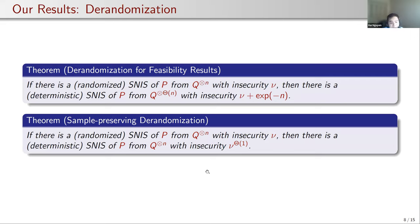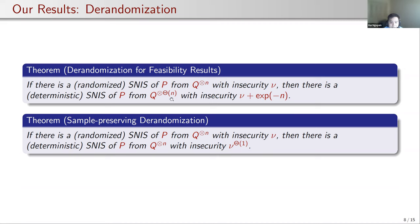Let me summarize our results. Our first class of results is de-randomization, which tells us that private randomness is not essential for secure non-interactive simulation. We have two different ways to de-randomize reduction functions. The first de-randomization result tells us that if there exist randomized constructions, then there also exist deterministic constructions that use more samples but are asymptotically the same, with almost identical simulation error.